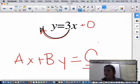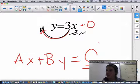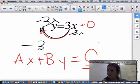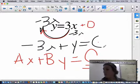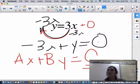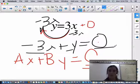And I'm going to go ahead and bring my 3X to the other side. Right now, it's positive 3X, so I'm going to subtract 3X from both sides. So I have negative 3X plus Y equals zero. So this one can be wrote in standard form. So my A would be negative three, my B would be one, and my C would be zero.